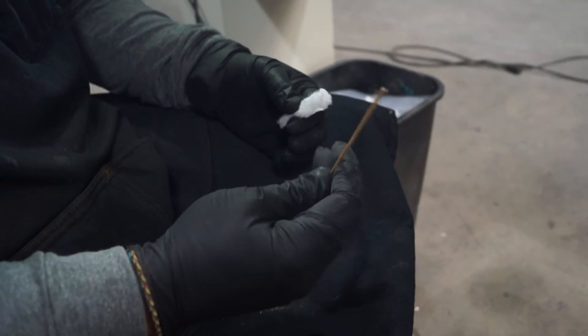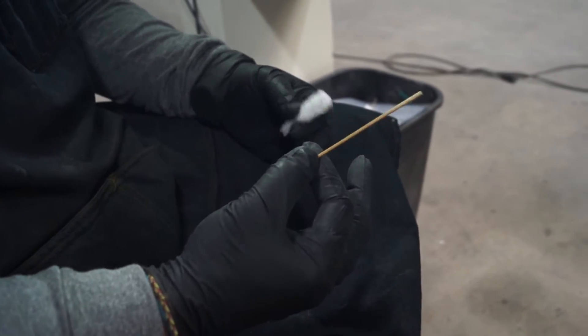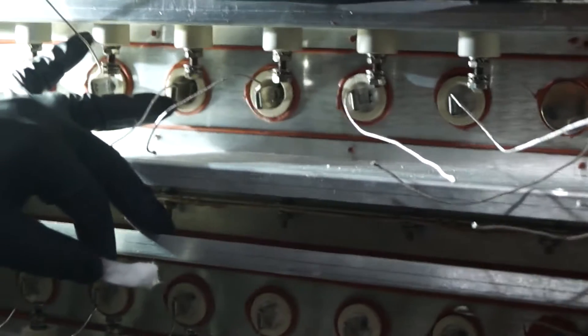You're going to want to use a barbecue skewer or an applicator tip, just the wood part. It's non-metallic so you're not going to scratch or crack the bulb.